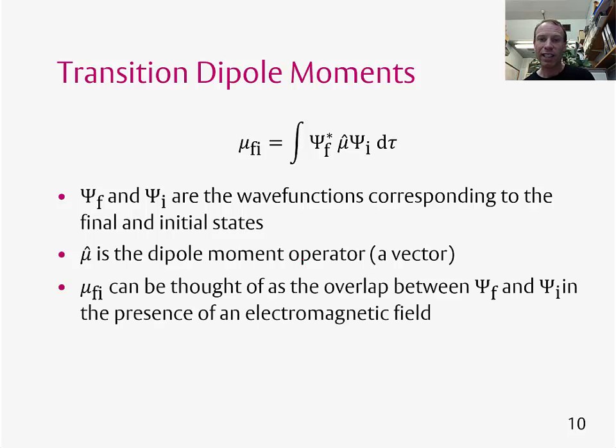We integrate this overall space, and it gives us mu fi. Mu fi is just a number, and it's a number that can be calculated, and it can be thought of as the overlap between the initial and final state wave functions in the presence of an electromagnetic field.